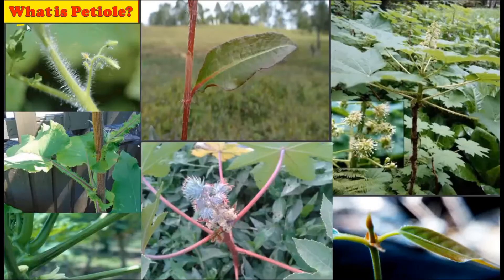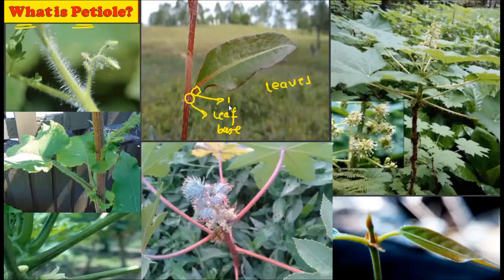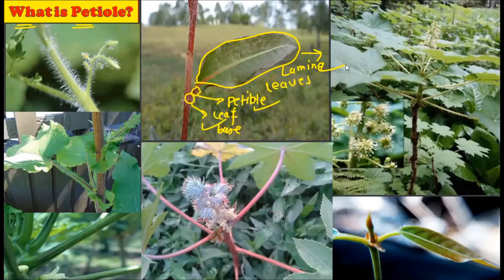First of all, let's get clear about what is petiole. Every plant has certain kinds of leaves, and these leaves are made up of three parts. The very first part is the leaf base. Above this leaf base, there is a stalk called the petiole. After the petiole, we have the main lamina. So the three parts are: leaf base, petiole, and lamina. The petiole is present between the leaf base and the lamina — it is a connecting part of the leaf base and the lamina.